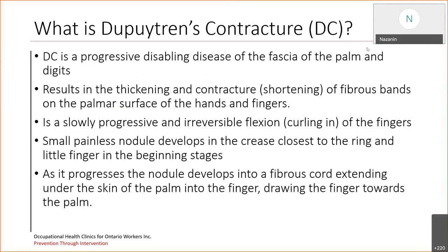What is Dupuytren's Contracture? It's a progressive disabling disease of the fascia, which affects the palm and the digits of the hands, and it results in the thickening and contracture of fibrous bands on the palmar surface of the hands and fingers. It's slowly progressive, but it has irreversible flexion of the fingers, and it has a small painless nodule that develops